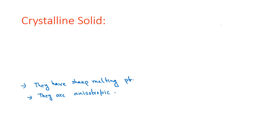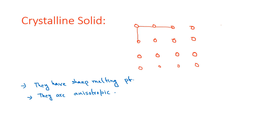So what is crystalline solid? Suppose these are molecules. Crystalline solid says that if the molecules are arranged in a regular way — it means that geometrically their arrangement is regular — then we can say this is a crystalline solid. The distance between two molecules must be the same in this axis, and the same in this axis. So you see one regular arrangement or regular pattern is there. If the molecules are arranged in a regular geometrical pattern, then we can say this is a crystalline solid.